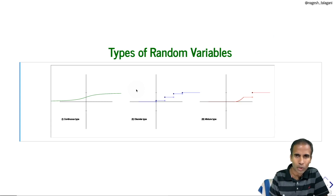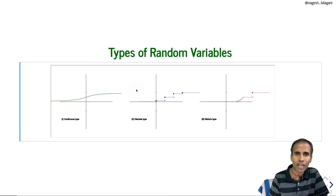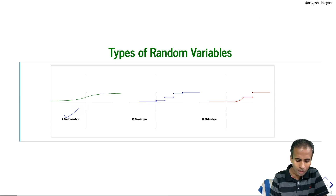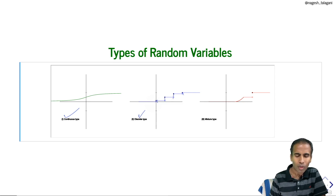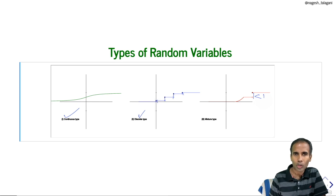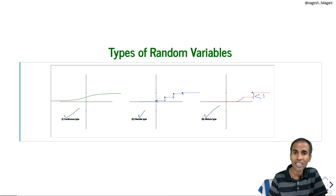Here are three graphs as examples of CDFs. The first one is continuous everywhere, so the corresponding random variable is continuous type. The second one is discontinuous with four discontinuities and the sum of jump lengths exactly equal to 1, so the corresponding random variable is discrete type. The third one has only one discontinuity but the jump length is strictly less than 1, so it is mixture type. In this course, we study only discrete type and continuous type random variables.